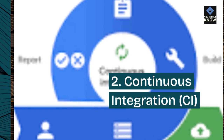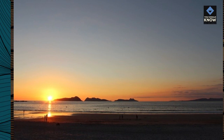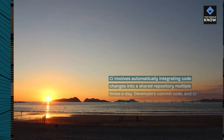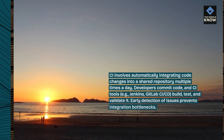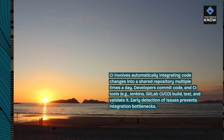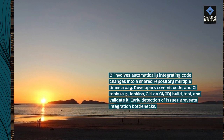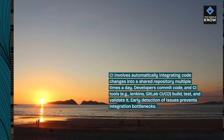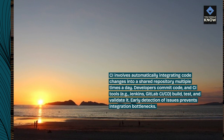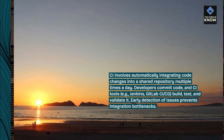2. Continuous Integration (CI). CI involves automatically integrating code changes into a shared repository multiple times a day. Developers commit code, and CI tools — such as Jenkins and GitLab CI/CD — build, test, and validate it. Early detection of issues prevents integration bottlenecks.